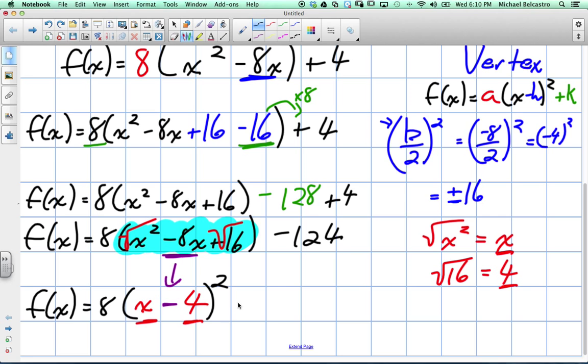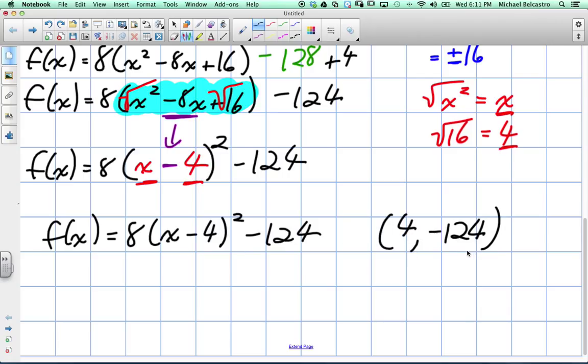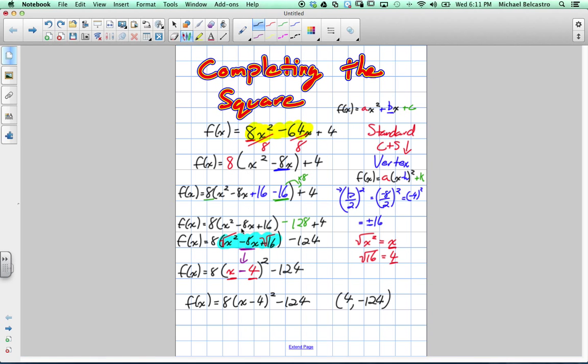Okay. And then we bring on what's on the outside, negative 124. So I'm just going to get rid of the color, but we're essentially done. That's our vertex form. f at x is equal to 8 x minus 4 squared minus 124. So the vertex is at positive 4 and negative 124. So it's really low. Yeah. The vertex, right? And if you notice our a value was 8 here and it's still 8 there in our vertex form.